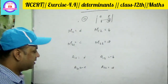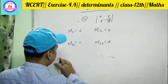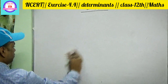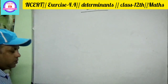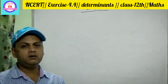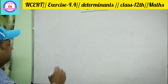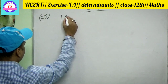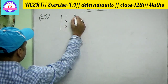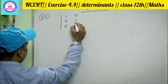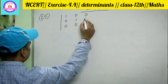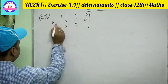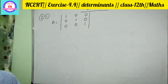Question number two, first part is of order 2×2. Question 2, first part is a 3×3 order matrix: 1, 0, 0, 0, 1, 0, 0, 0, 1. Suppose we have to find all the minors.